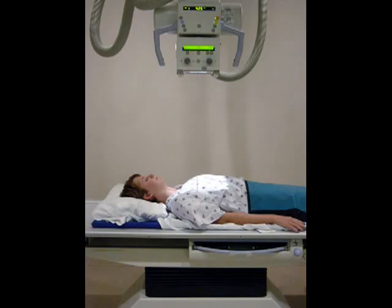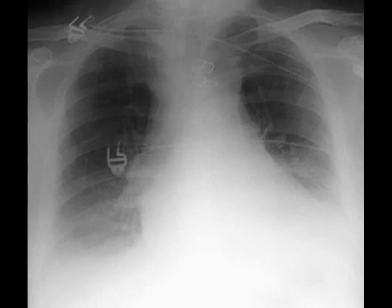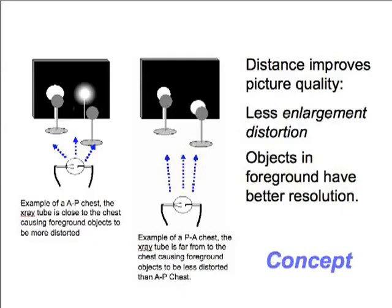More common for respiratory therapists to see is what's called the AP chest, or anterior to posterior. This is the type commonly done on patients that can't leave the ICU to go to the x-ray department. It's done with a portable machine pushed into the patient's room. The AP technique is not as good as the PA — when the tube is too close to the patient, foreground objects tend to be less distinct, it enlarges the heart abnormally, and fuzzes out foreground objects. With the PA chest, the light source is put further back, doing a better job of preserving the clarity of foreground objects.